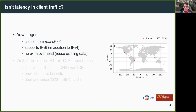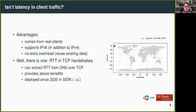The question is: isn't the latency information available in client traffic? Because if that were the case, you could just derive that from real traffic, from real clients, and for IPv6 traffic as well. That would require no active measurements — we just analyze the incoming data that we have anyway. And there is one source: the RTT available in the TCP connection handshake.